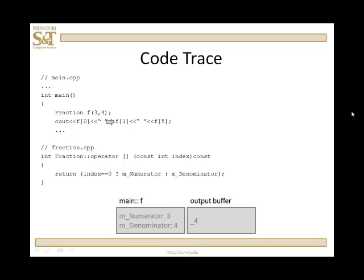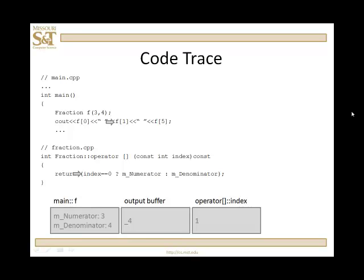Then we're going to call f bracket operator passing 1. Index is 1. That's not 0. And so we return the denominator. So 4 goes into the output buffer. Then a space.